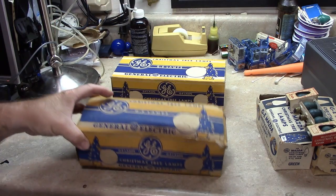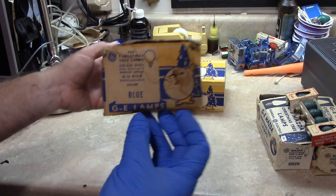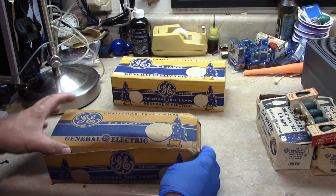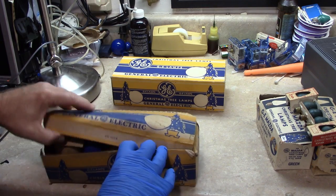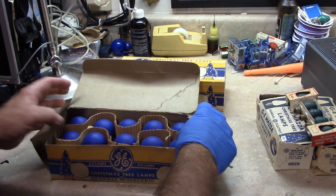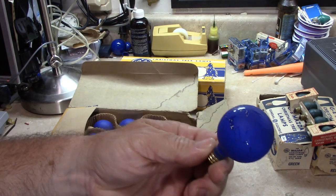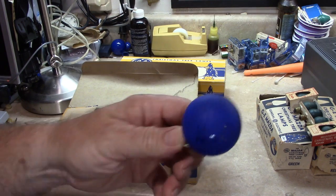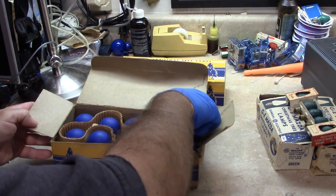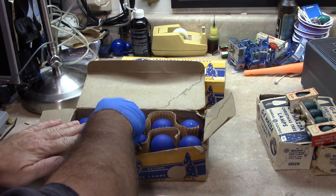These, the box is in worse condition but the bulbs are in better condition. And again they're in the correct box. One got wet. You can see the water damage on the box. And of course this one bulb the finish is quite damaged on it. But the rest of them are in real good shape.